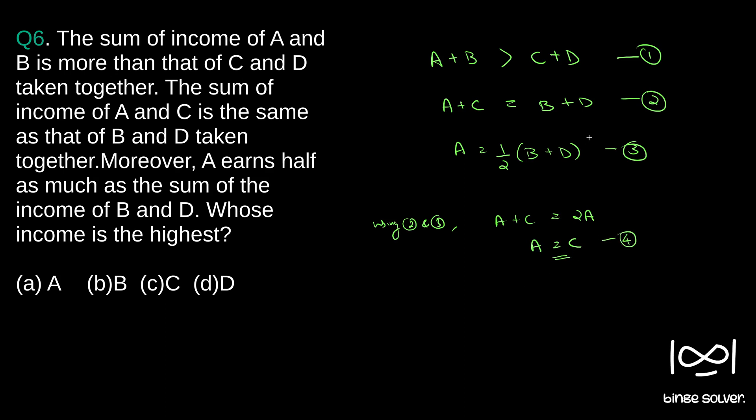Now, since A is equal to C, if you start using 1, using 4 and 1 we can see if you cancel out A and C from this since A is equal to C, B is greater than D. We get B greater than D. So, we have B greater than D.